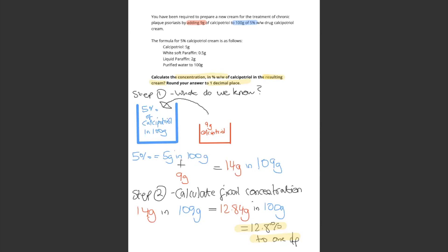So what we're having here is a patient who has chronic plaque psoriasis. They are adding 9 grams to 100 grams of 5%. So if it's 5%, then that means there are 5 grams in 100. And then you're adding in 9 grams on top of that.